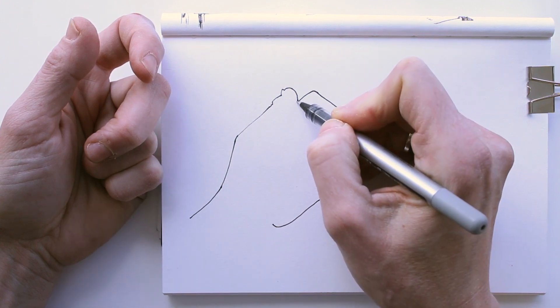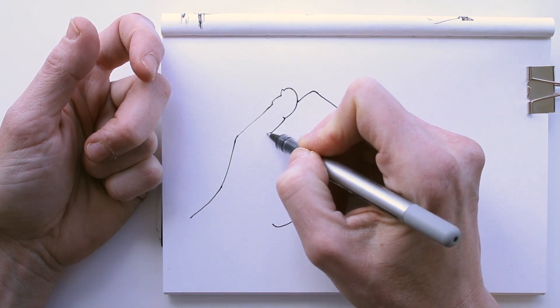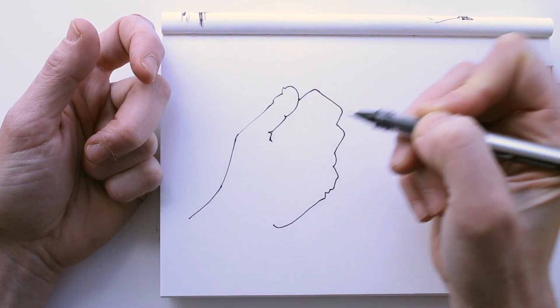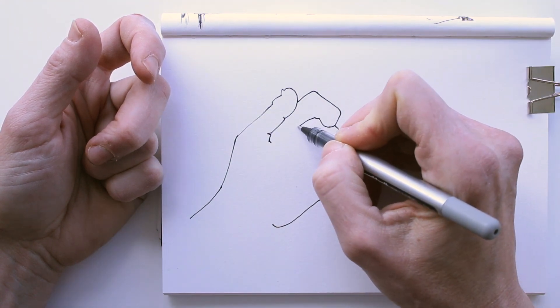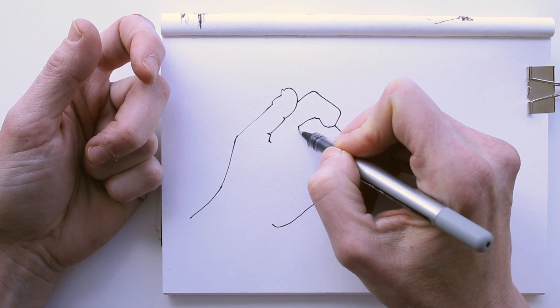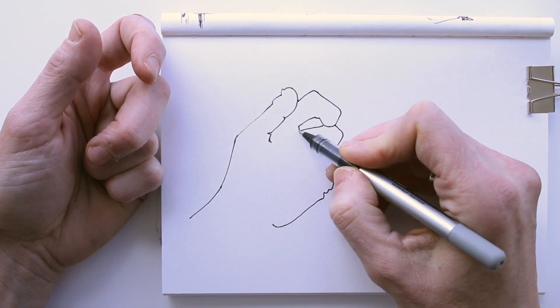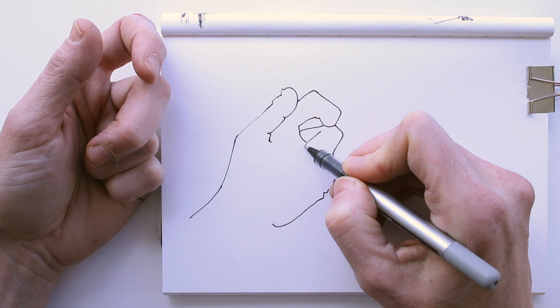Once the first outline is on your paper, you can start adding details. Look for negative spaces inside of the shape. There's one here, for example. It helps you to find the place where to put your next line or shape.